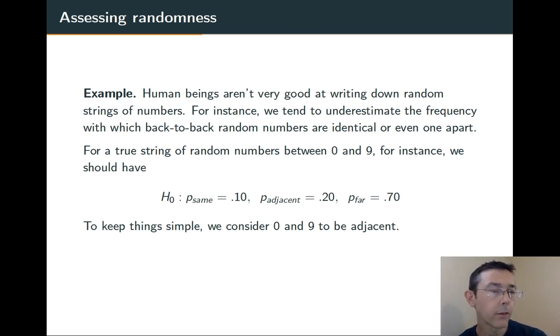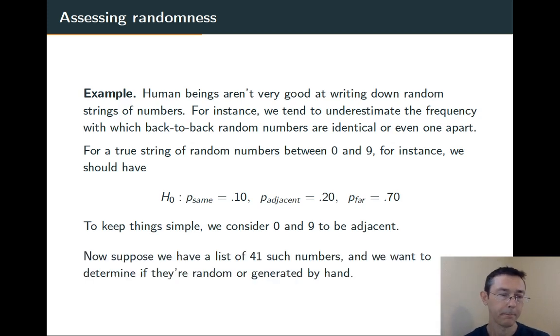For the purposes of this example, we're going to consider 0 and 9 to be adjacent. It keeps those probabilities fairly simple and makes this example more clear. So imagine we have a list of 41 numbers, so 40 back-to-back pairs. And we want to determine if they're truly randomly generated or if they were listed by hand by a human being.